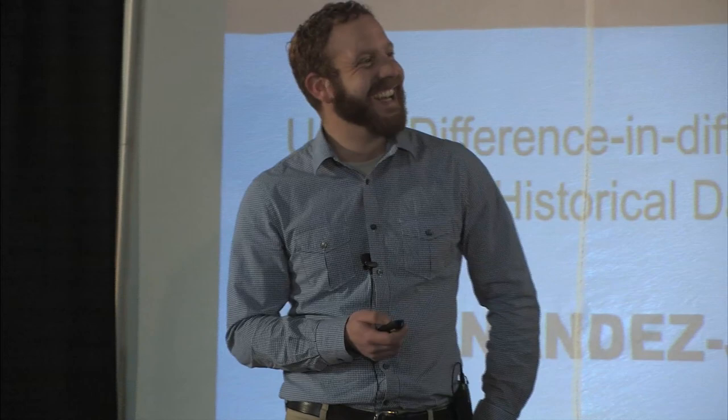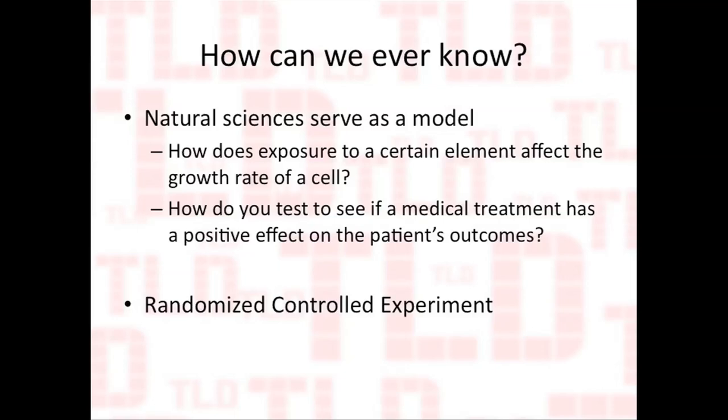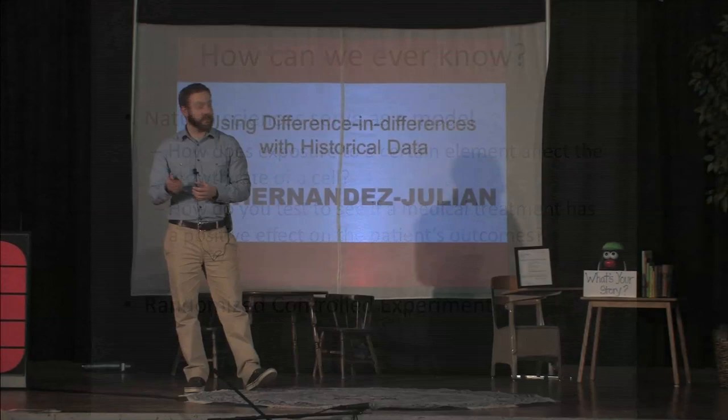So the question is, this one-fifteenth of a standard deviation answer — how can we ever know something like this? Natural sciences are a great model here; they've been doing this a lot longer than the social sciences have. We can try to learn from them to figure out how you ever infer true causation. They're answering questions like: if you expose a cell to a certain element — a little more oxygen, a little less oxygen, some arsenic — how does it affect its growth rate? Or, if you expose a cancer patient to a certain treatment, how do you know what effect that treatment will have on his health outcome?